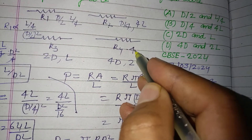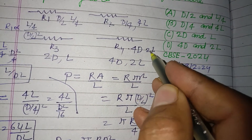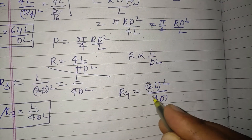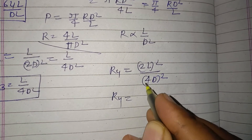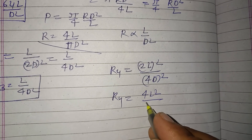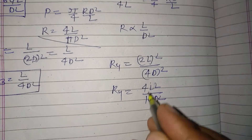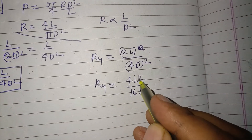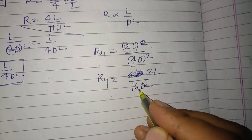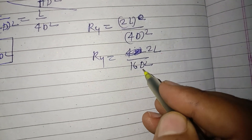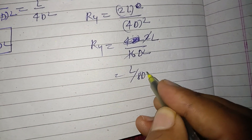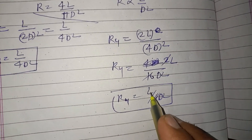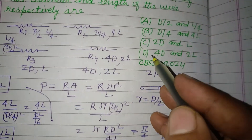For Wire 4: R4 ∝ L/D², where L = 2L and D = 4D. So R4 ∝ 2L / (4D)² = 2L / (16D²) = L/(8D²). Comparing all four: R2 (64L/D²) > R1 (L/D²) > R3 (L/4D²) > R4 (L/8D²). Therefore, R4 is the minimum resistance, so option D is the correct answer.